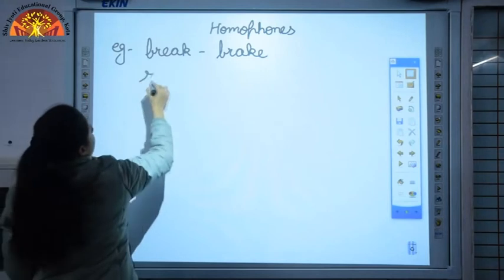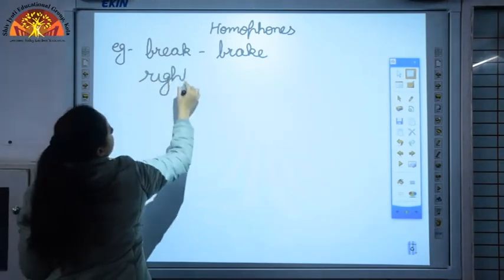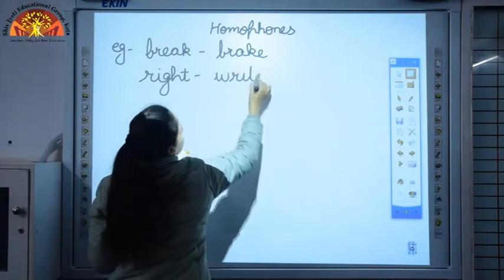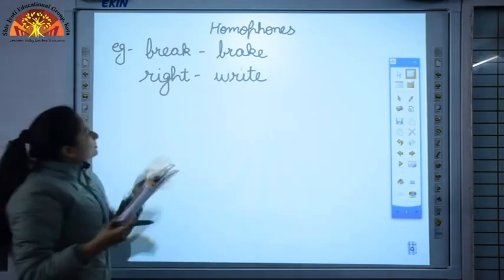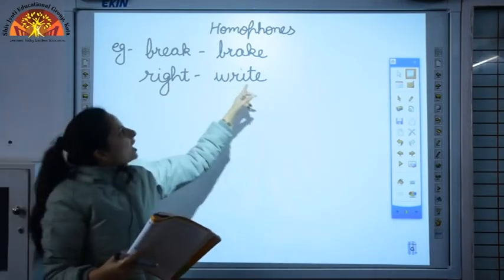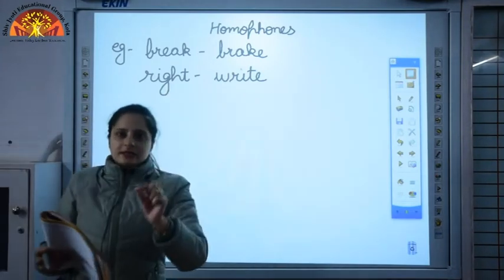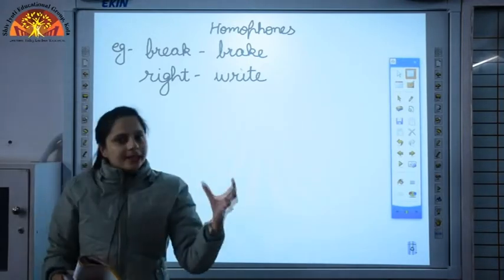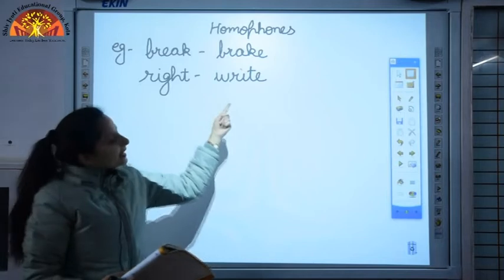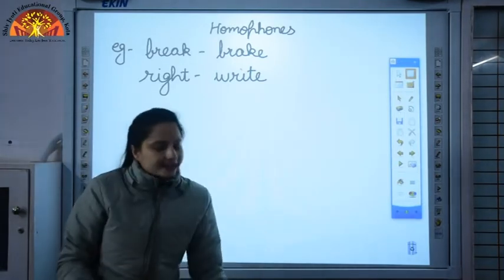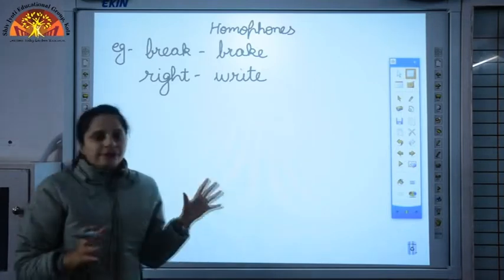Second example is right and write. This right over here means correct, and W-R-I-T-E means when you write with pen or pencil. Both of these words have the same sound but the spelling and the meaning of these two words is different. So these are called homophones.